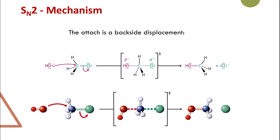Because it's bimolecular, the mechanism takes place in one step. The nucleophile — which is OH — will attack the electrophilic carbon at the same time while the chloride, which is the leaving group, is leaving. This happens through a transition state, where the OH starts to make a bond and the chloride starts to break its bond. As OH approaches and starts to make the bond, the chloride starts to break its bond, and eventually you end up with your product.